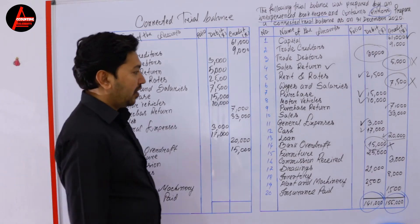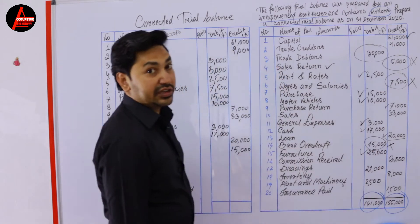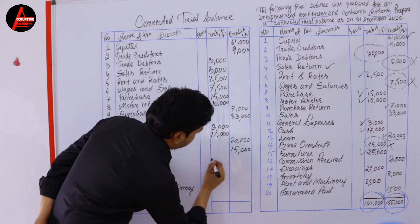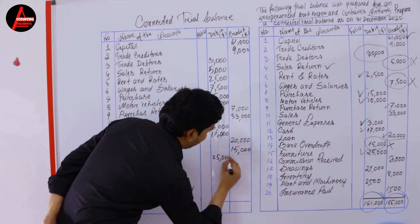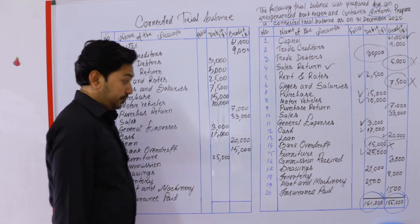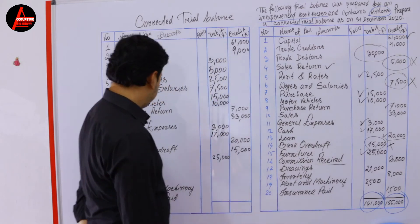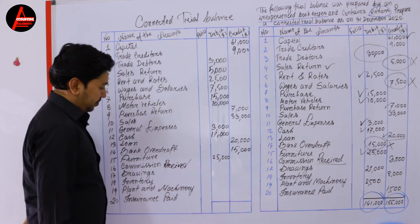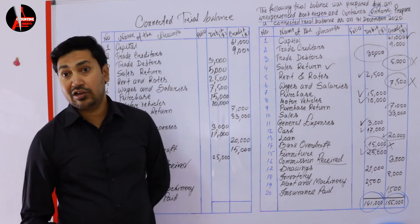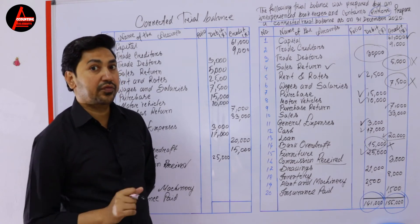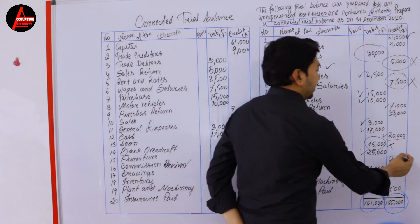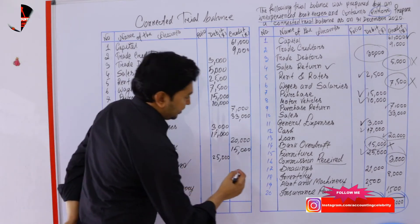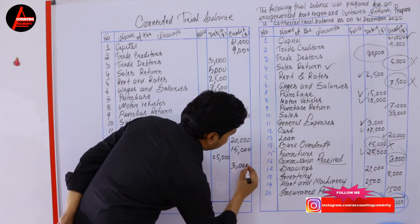Next is furniture — furniture is debited because it is an asset. How much? 25,000 dollars — write 25,000 dollars on the debit side. Next is commission receipt — what is commission receipt? It is a gain, an income. All incomes are credited; all expenses are debited — those are the rules of the nominal account. It is written on the credit side, so commission receipt is correct. Write 3,000 dollars on the credit side.